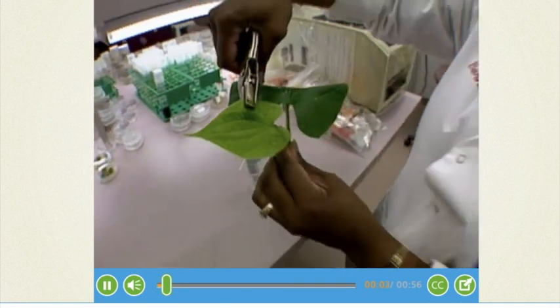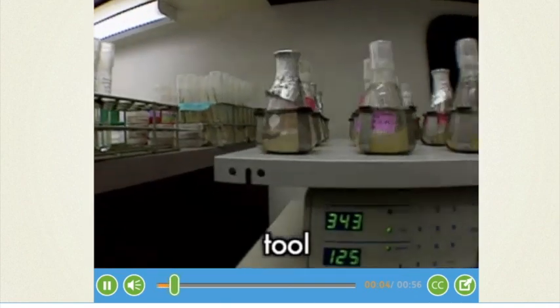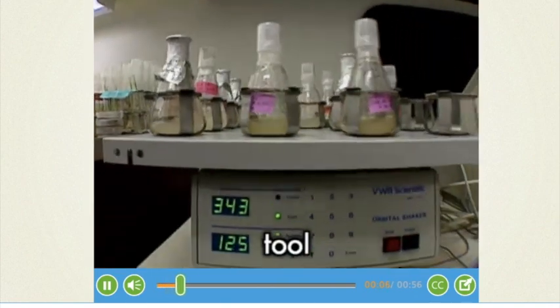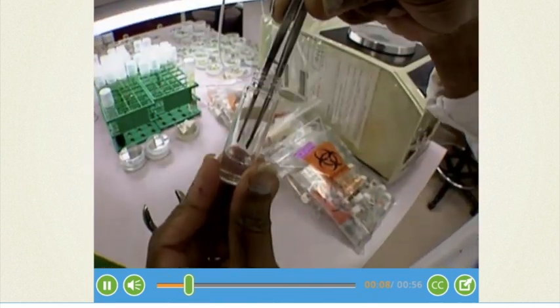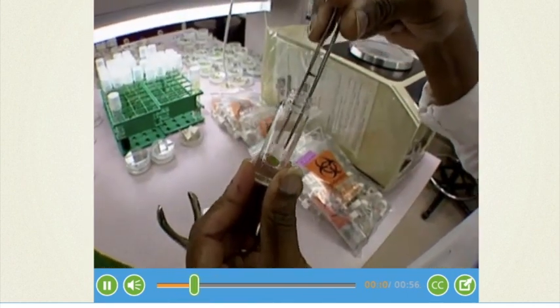Scientists use many kinds of tools. A tool is an object or device used to perform a task. Tools can help you measure and gather information about the things you are observing.